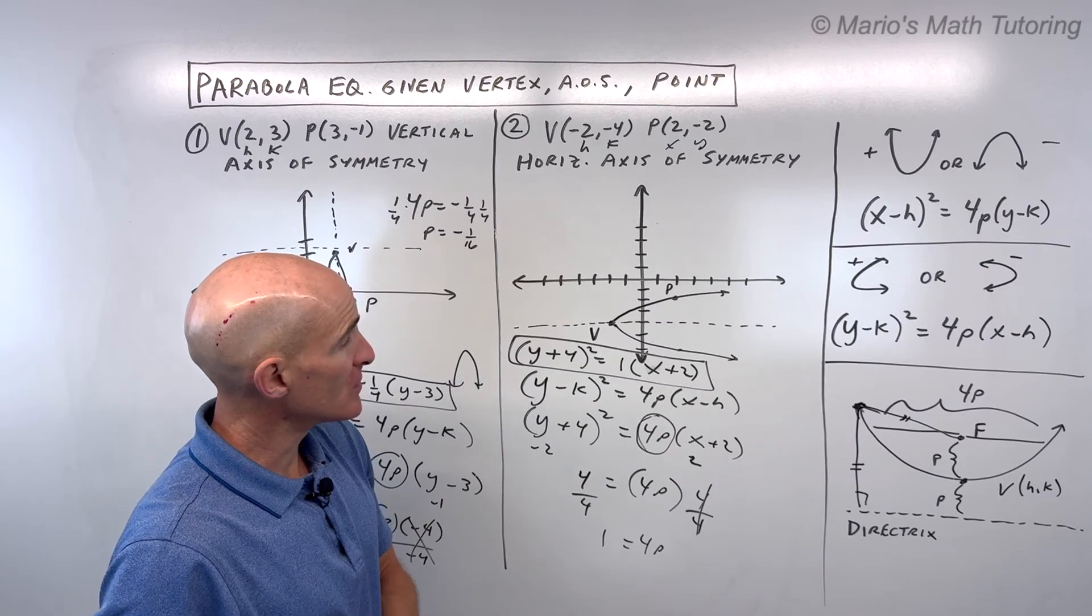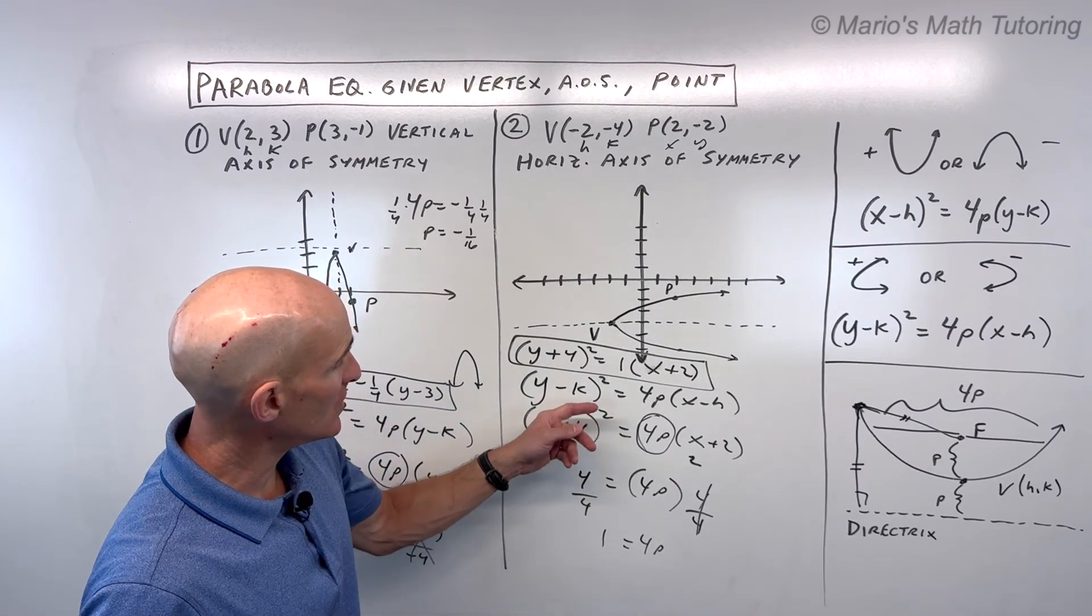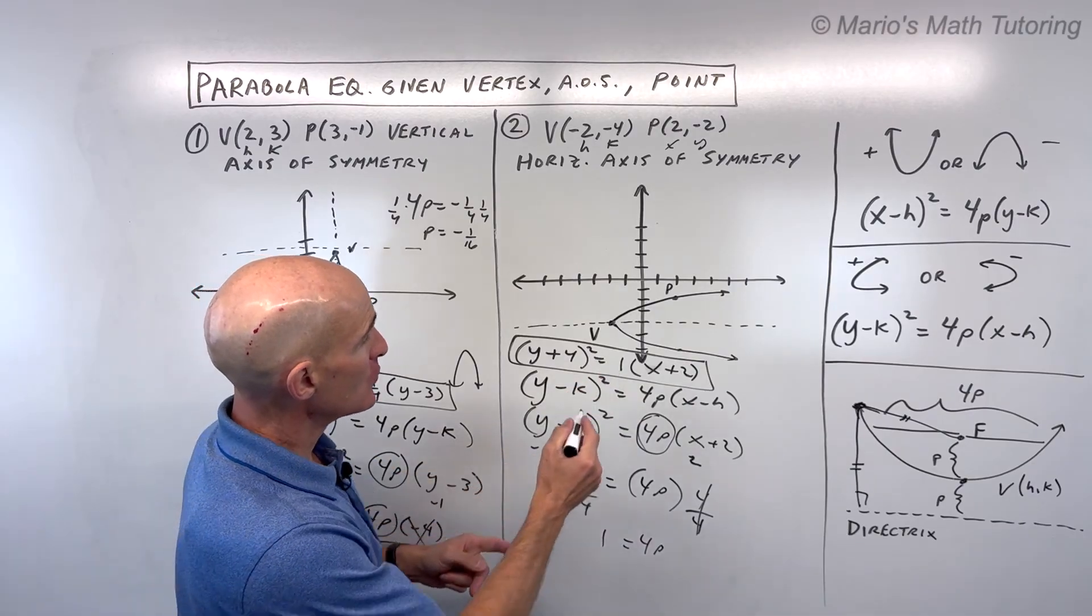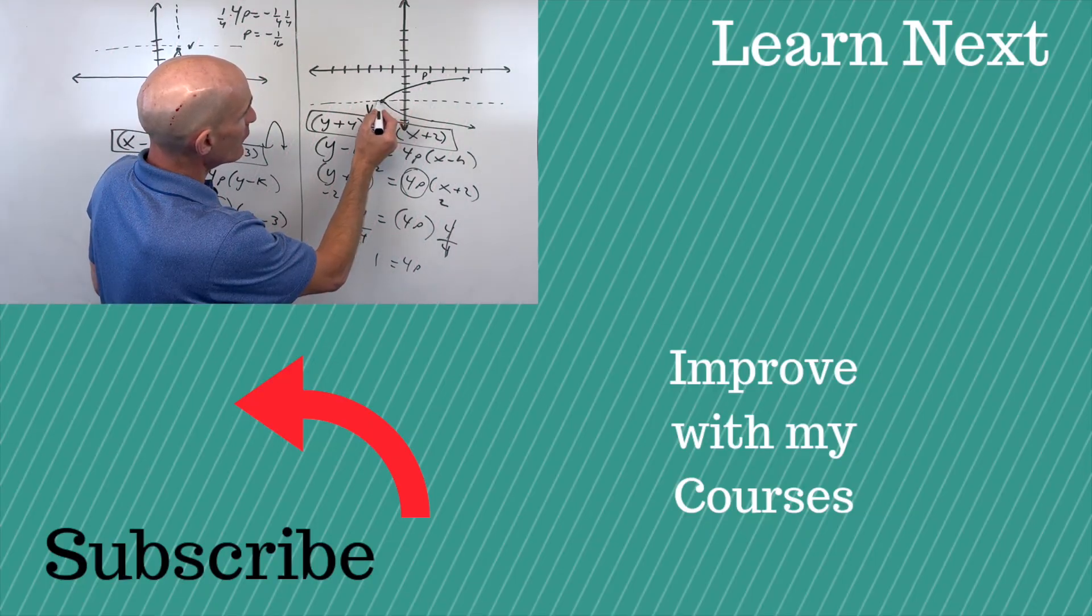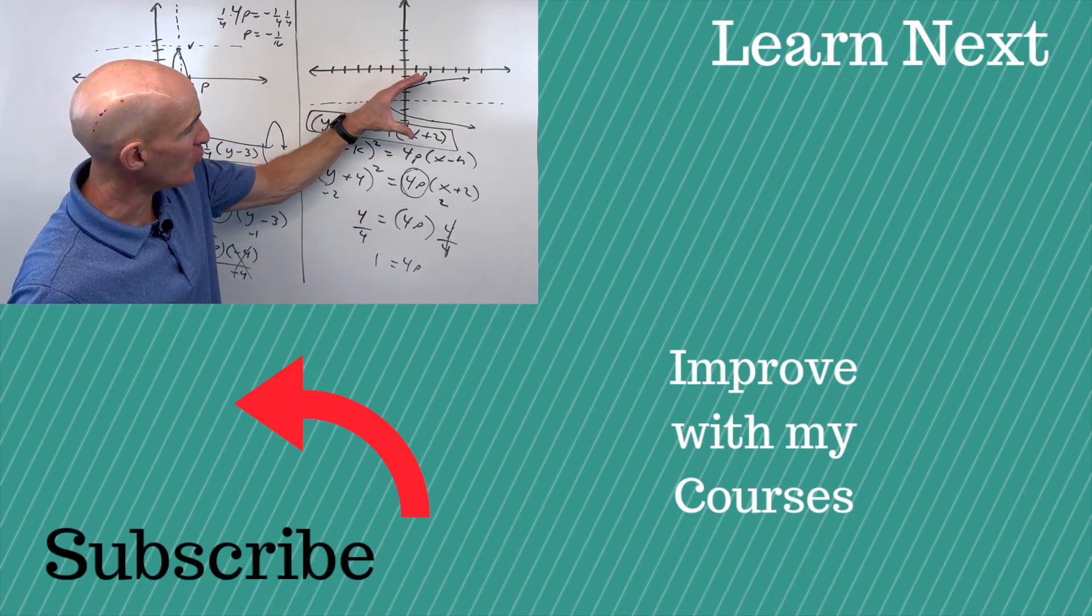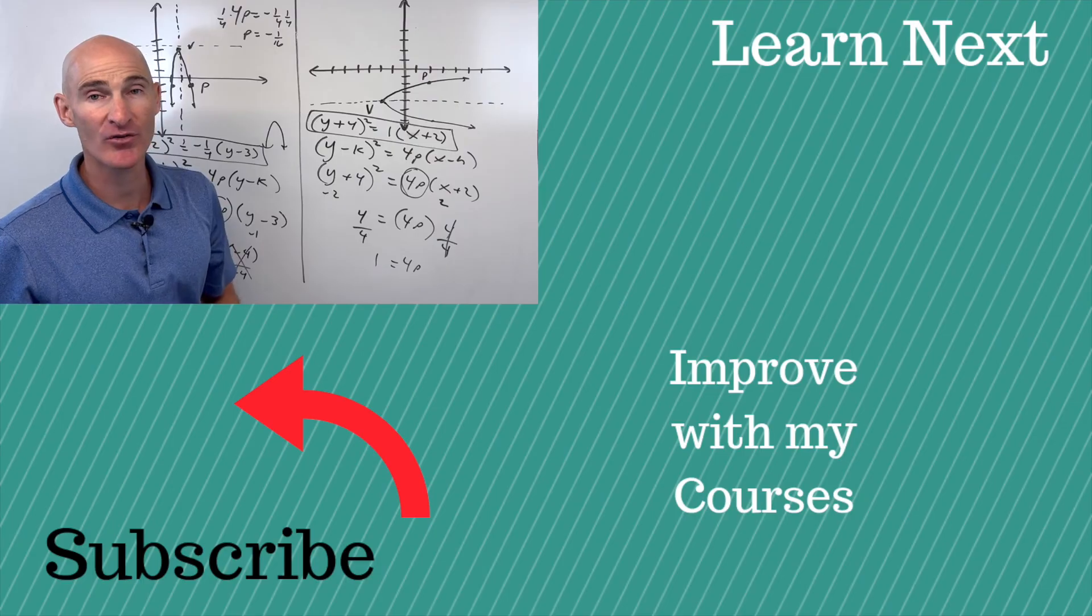Now, if you want to find the coordinates of the focus and the directrix, what you would do is, you'd set 4P equal to 1, so P equals 1 fourth. You would go 1 fourth to the right, there's your focus. 1 fourth to the left of the vertex there is going to be your directrix. Remember the parabola always opens towards the focus, away from the directrix.